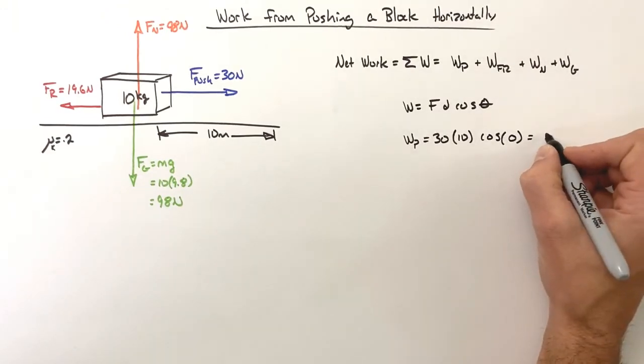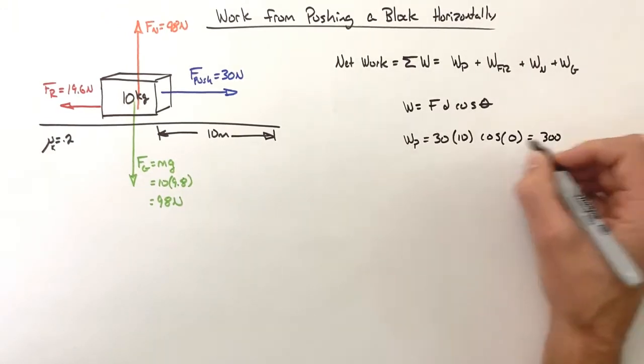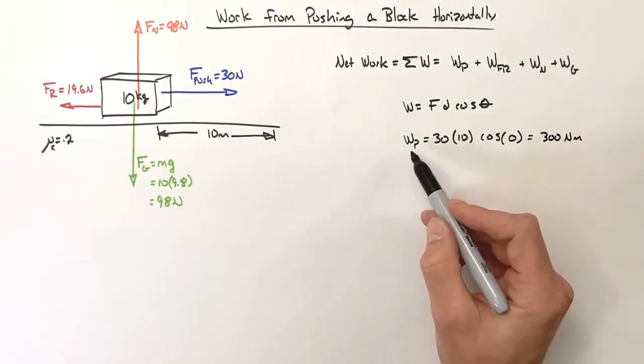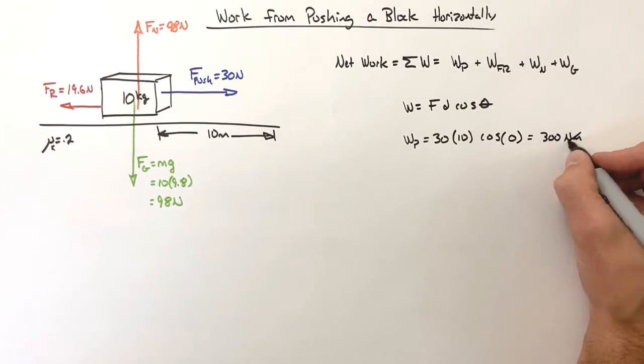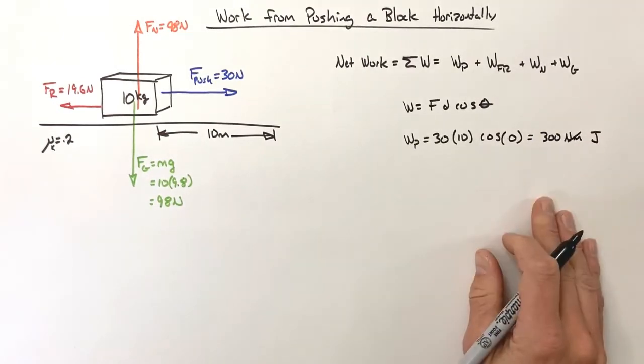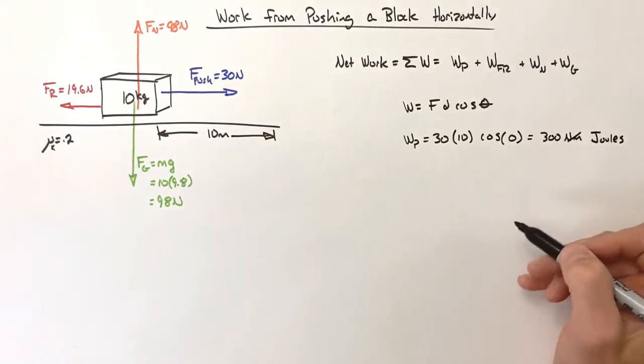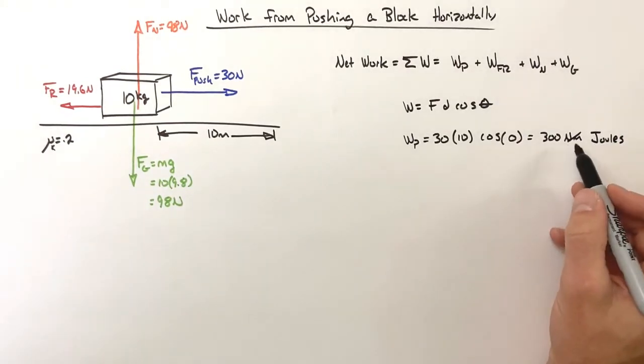So work this out, you're going to get 300 newton-meters. Now we don't actually refer to work as newton-meters—what we call them are joules. We'll just use the letter J for joules. A joule is nothing other than a newton-meter.